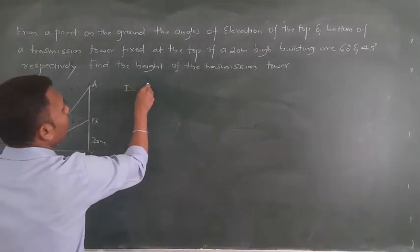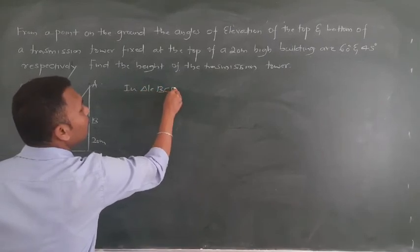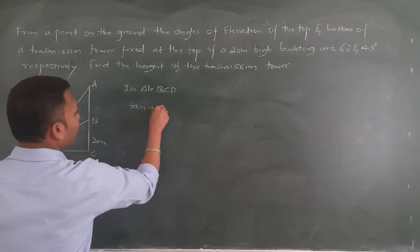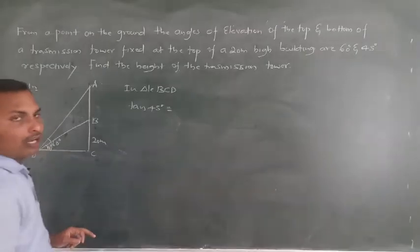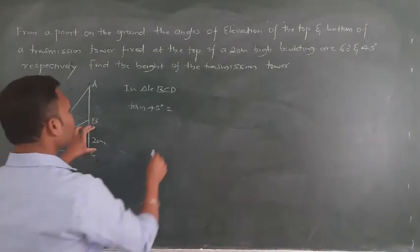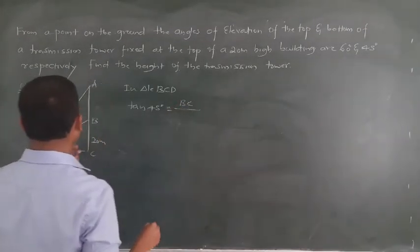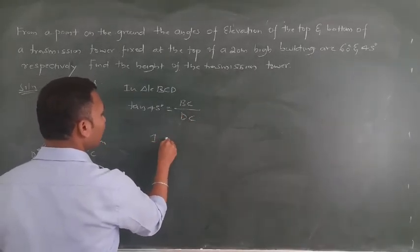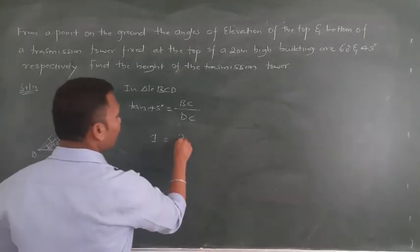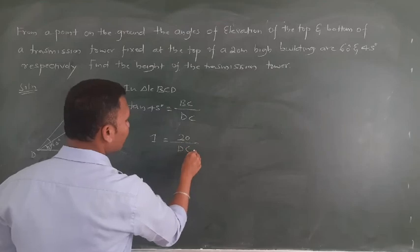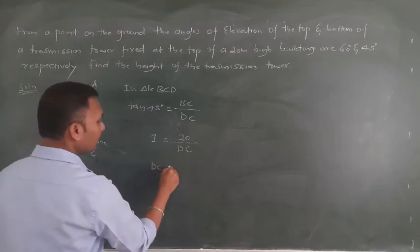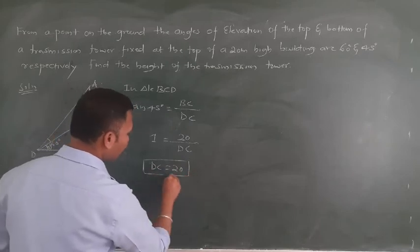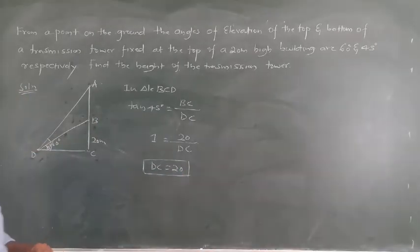In triangle BCD, applying tan of 45 degrees: tan 45 equals BC over DC. Tan 45 is 1, so 1 equals 20 over DC. Therefore DC equals 20 meters.